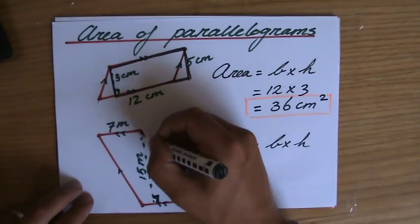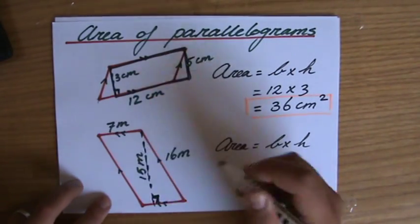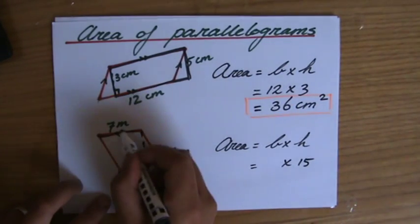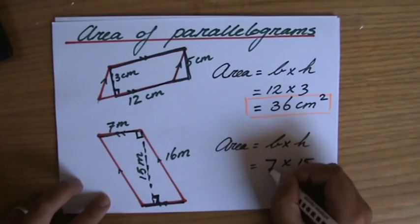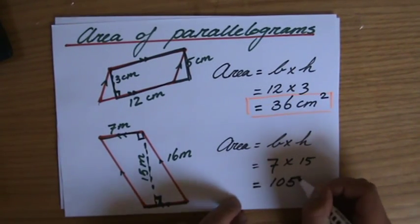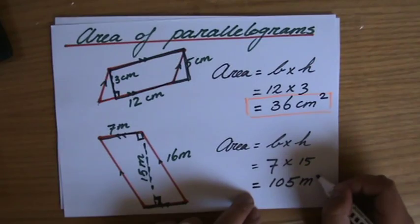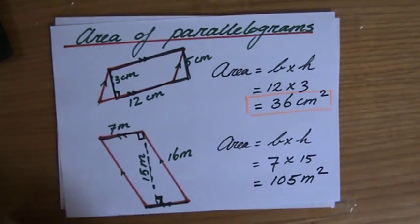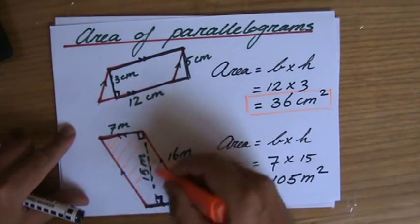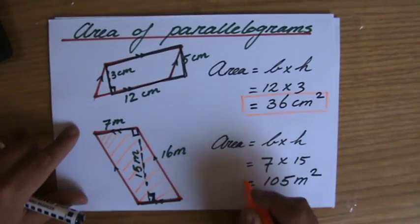So this could be the height. And what is the base? Well, that is going to be seven, because that's also 90 degrees. So seven times 15—that's 105. And what is the unit? That's meters squared. So the area of this particular parallelogram is 105 meters squared.